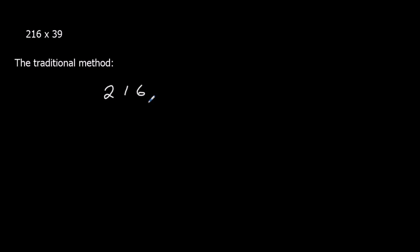This is where we write 216 on top of 39, so we've lined up the units, the tens, and the hundreds. We're going to start with this 9, and we're going to do 9 times 6. So 9 times 6 is 54. The 4 goes here, and the 5 carries over.